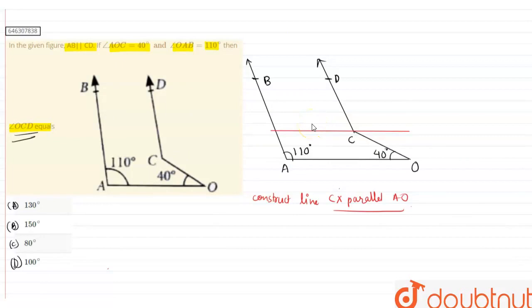So now we have drawn the line parallel CX. This is X here, which is parallel to AO. Now what we are going to do, if you see here carefully,